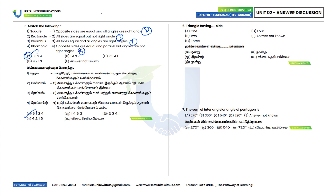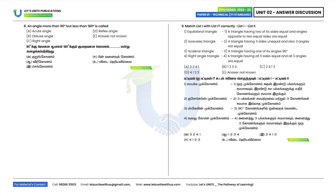Sixth question: Triangles have how many sides? Triangles have 3 sides, Option C. Seventh question: Sum of interior angles of a pentagon is 540 degrees, Option C is the correct answer. Eighth question: An angle more than 90 degrees but less than 180 degrees is an obtuse angle.